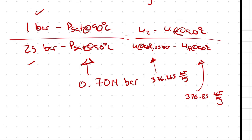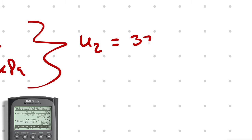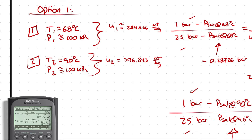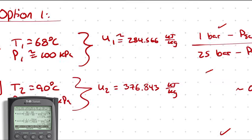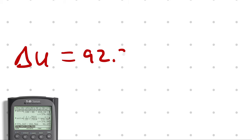With those values, I perform the interpolation: (1 − 0.7014) divided by (25 − 0.7014) equals (X − 376.85) divided by (376.265 − 376.85), giving U2 = 376.843 kJ/kg. So delta U with option 1 is U2 minus U1: 376.843 minus 284.566 equals 92.277 kJ/kg.